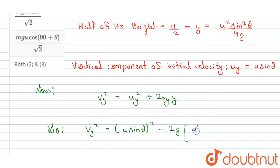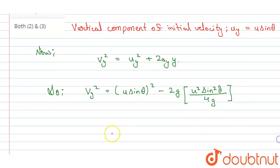Here y = u² sin² θ / 4g. Okay, now when we simplify this equation,